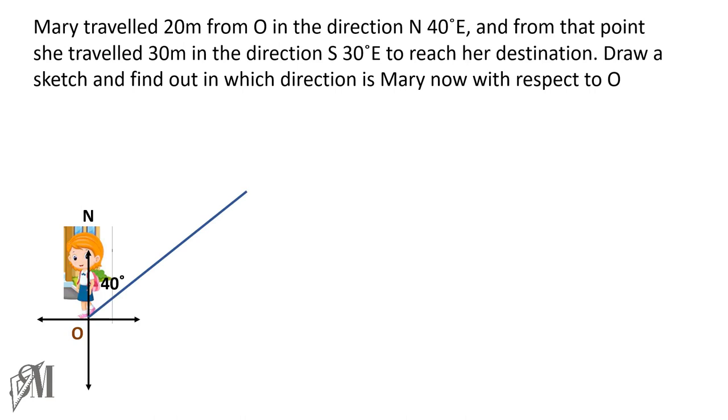And from that point, she is again moving in another direction. Therefore, at that particular point, I am marking the four main directions again like this. And then 30 degrees east of south will be like this, so mark 30 degrees appropriately. And that is 30 meters she is traveling. Mark the distance as well.